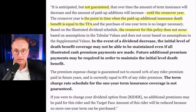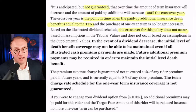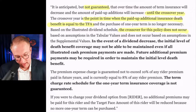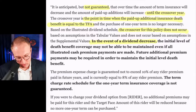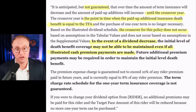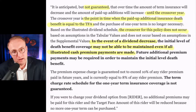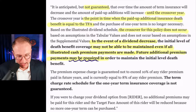So there's one element where what's assumed on the illustration is not going to happen in practicality. And then in the event of a dividend decrease — remember the dividend is assumed to pay the premium on this rider — in the event of a dividend decrease, the initial level of death benefit coverage may not be able to be maintained, even if all illustrated cash premium payments are made. You pay your full premium that we're illustrating, but if the dividend goes down — which by the way you can't control — well then the amount of death benefit that we're targeting, we may not be able to maintain. Therefore, future additional premium payments may be required in order to maintain the initial level of death benefit.